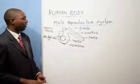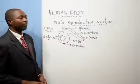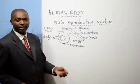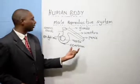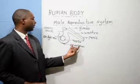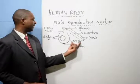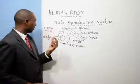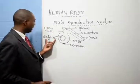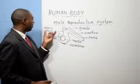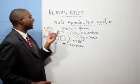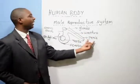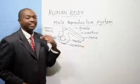Those are the parts of the male reproductive system. Let us just go through them: scrotum, testis — and testis are two — epididymis, the sperm duct, the glands, the urethra, and the penis.